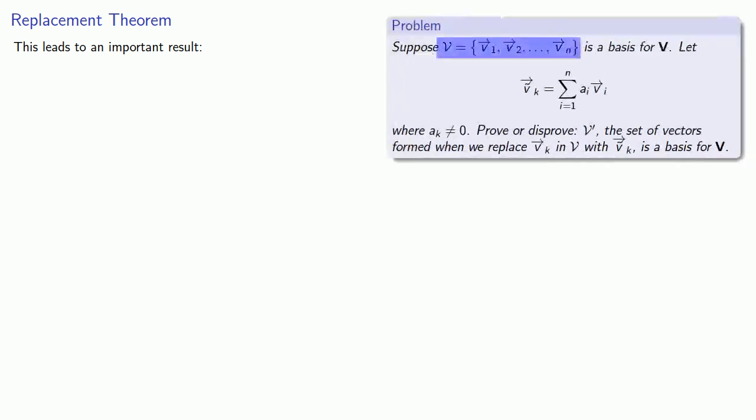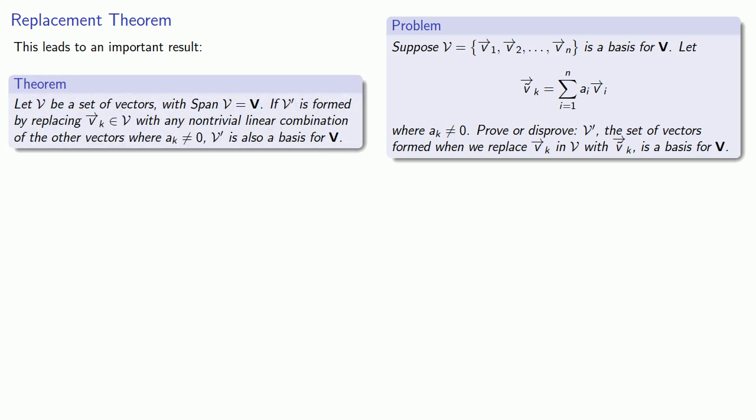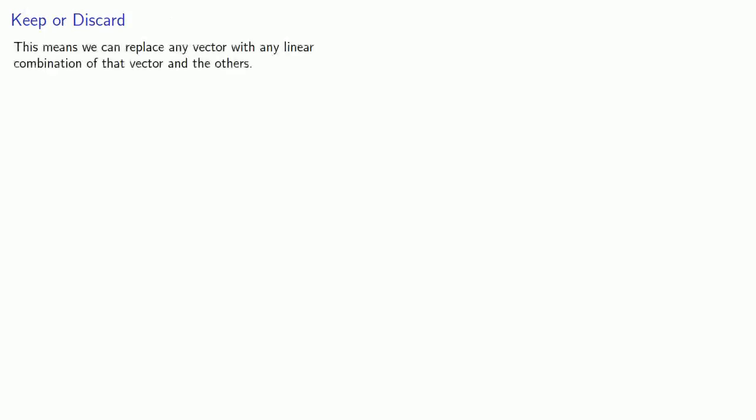This problem leads to an important result. We had some basis for v, replaced one of the vectors with a linear combination of itself and the other vectors, and proved the new set is still a basis. So: if v prime is formed by replacing some vector vk with any non-trivial linear combination of the other vectors where ak is not equal to 0, then v prime is also a basis for our vector space.